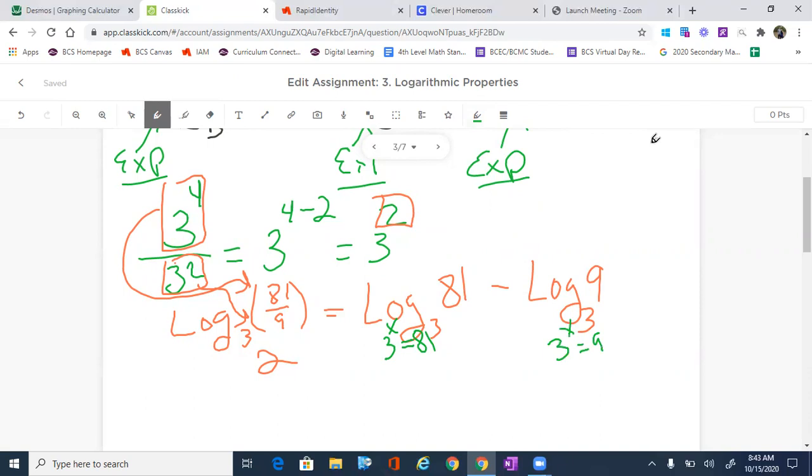So 3 to the x equals 81. That is 4. We got the answer already. So I'm going to write this is 4. 3 to the x equals 9. That is 2. x equals to 2. And we are going to subtract it. 4 minus 2 equals 2. Guess what? You're right. It is equal to 2. We know that.